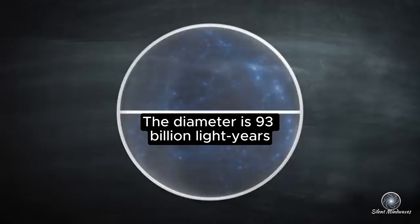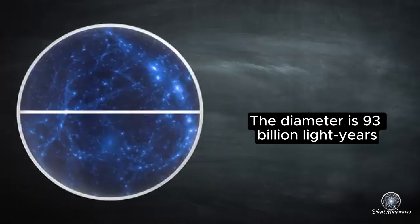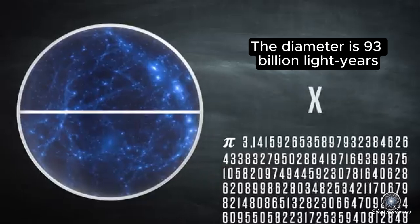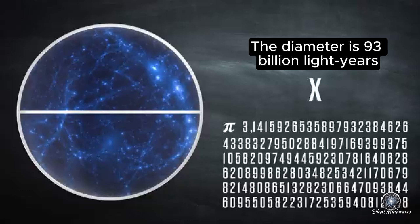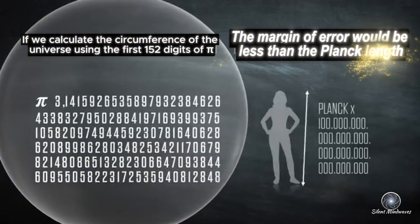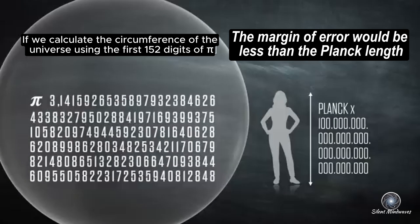Imagine a massive sphere. If you know the diameter of this sphere, you can calculate its circumference using pi. Now, let's take that sphere and give it a diameter of 93 billion light years, the approximate size of the observable universe. If we use the first 152 digits of pi to calculate the circumference of this sphere, would we get the exact result? No, not really. For one, we don't even know if the universe is a perfect sphere. However, the margin of error in this calculation would be smaller than the Planck length, which is the smallest theoretical distance in the universe. It's so small that no instrument could ever measure it.